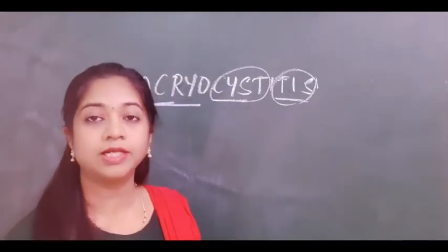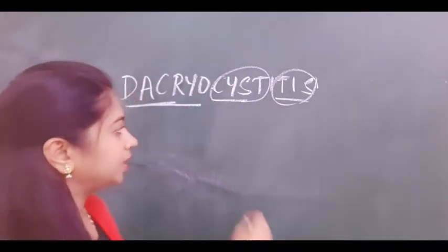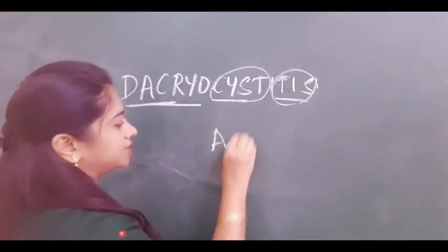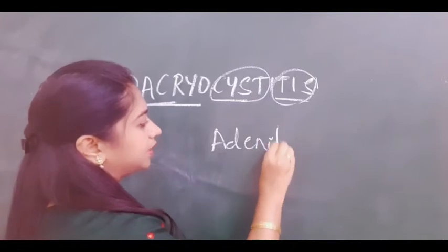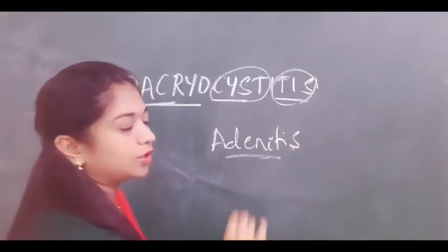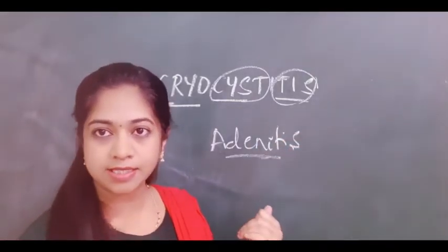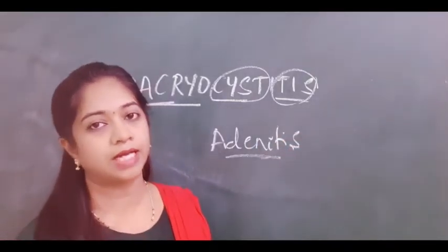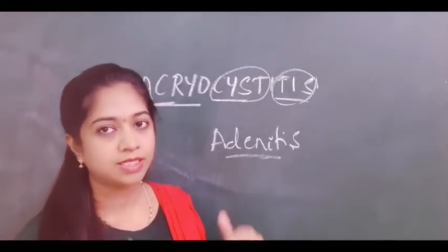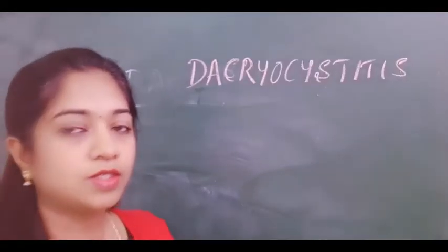What is the name given for the inflammation of the lacrimal gland? That is called dacroadenitis — this is inflammation of the lacrimal glands. Don't get confused: dacryocystitis is inflammation of the lacrimal sac, while inflammation of the gland is called dacroadenitis.